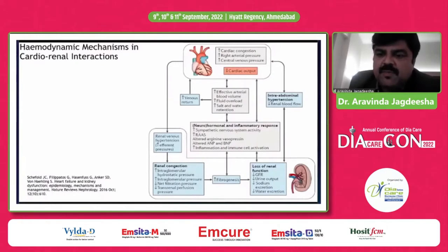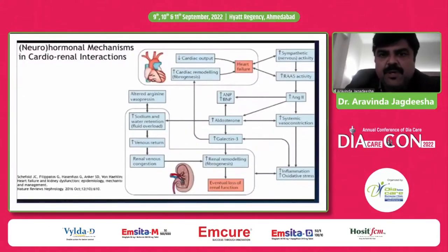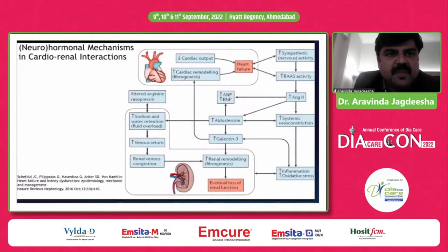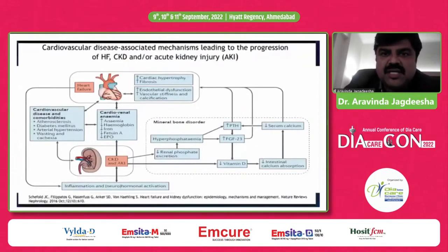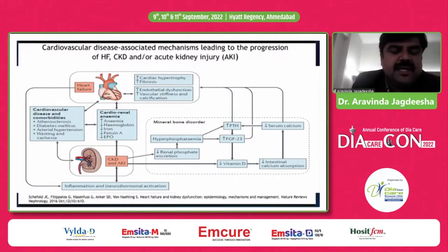The neurohormonal mechanism in cardiorenal interaction is pictorially depicted in this slide, showing how cardiac output matters in the eventual loss of renal function. Cardiovascular disease is associated with mechanisms leading to progression of heart failure, CKD, and acute kidney injury — showing various mechanisms by which heart failure is interlinked between chronic kidney disease and acute kidney injury as well.